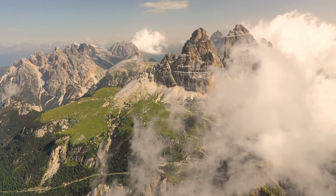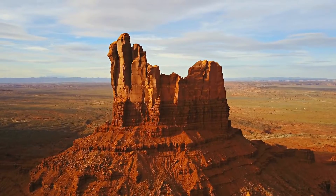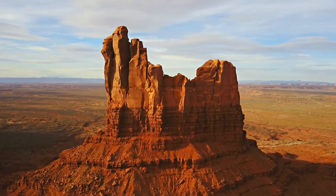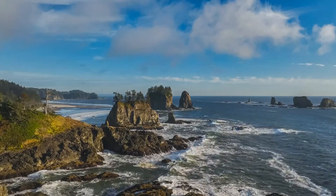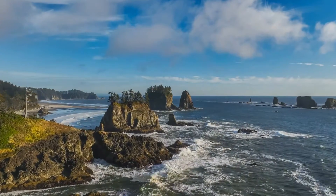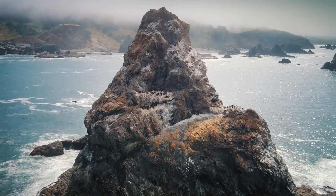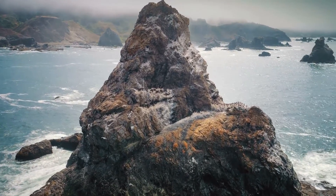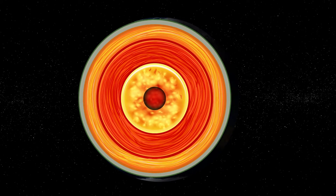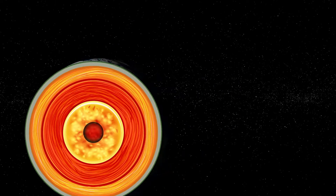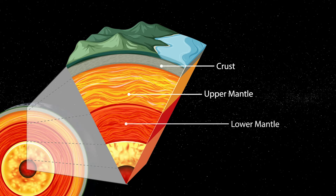The Geosphere is all the solid matter that makes up our planet, extending from the Earth's surface down to its core. It comprises rocks, mountains, beaches, and all other physical features, excluding water and living things. This includes not just the Earth's surface, but also the layers beneath it — the crust, mantle, and core.